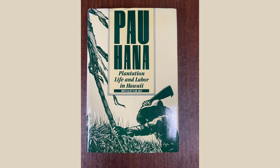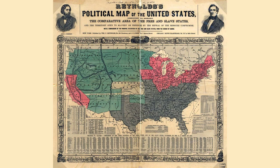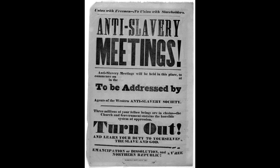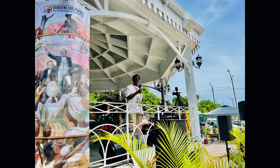Slavery and Sectionalism. Slavery became a central issue that fueled the growing sectionalism between the North and the South. Abolitionists in the North fought for the immediate emancipation of slaves, while many in the South defended the institution as essential to their way of life.